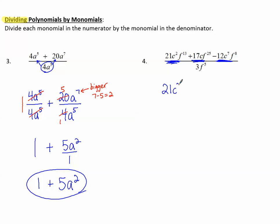So 21c²f¹³ divided by 3f⁵ plus 17cf²⁵ divided by 3f⁵ minus 12c⁷f⁸ divided by 3f⁵.